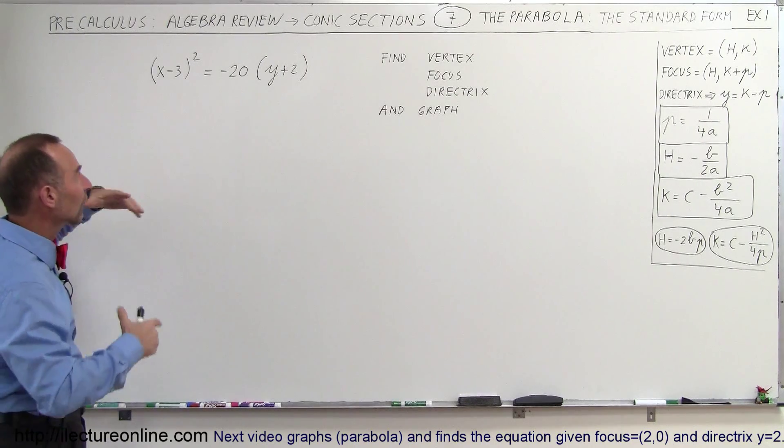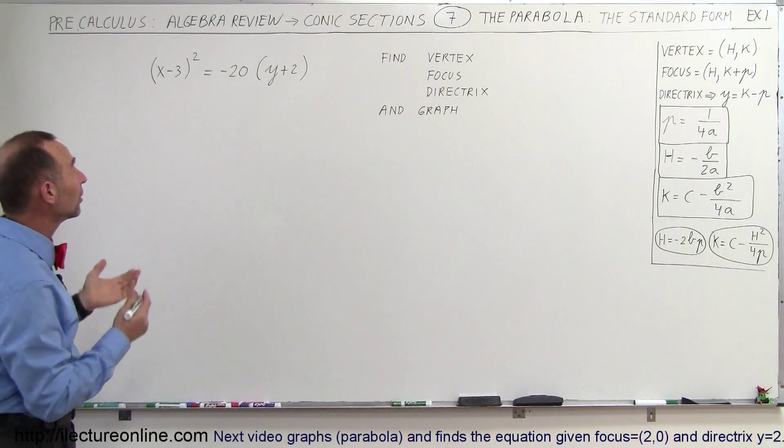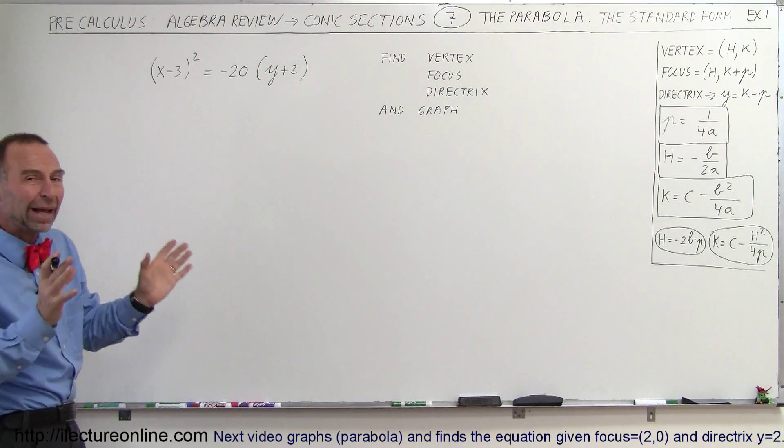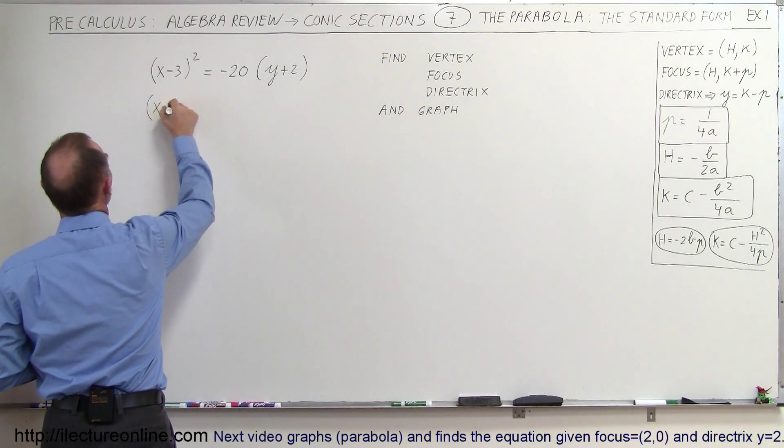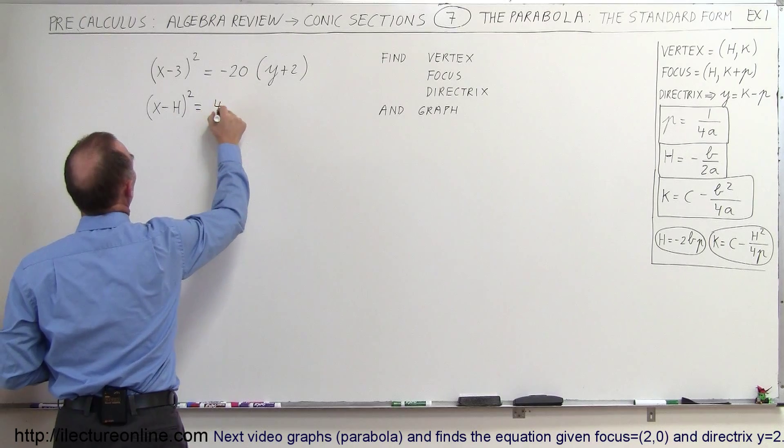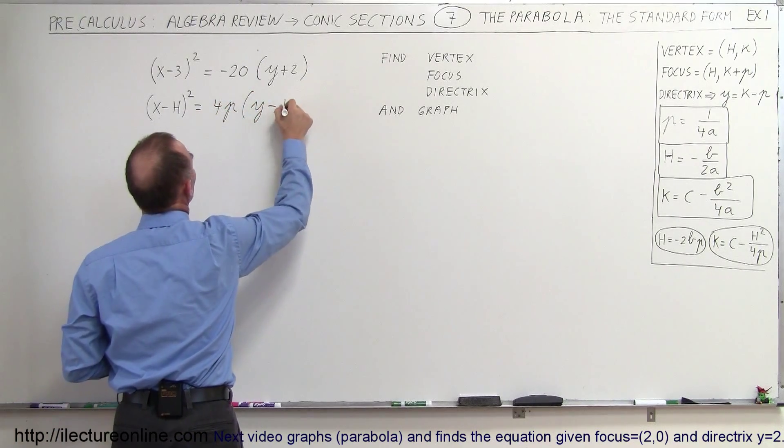So here we have the equation. It is somewhat in standard form. Matter of fact, it's exactly in standard form for that matter. But in order to see that, we want to write the standard form right underneath it. So here we can write x minus h quantity squared is equal to 4p times y minus k.